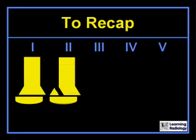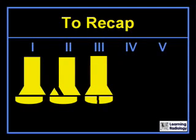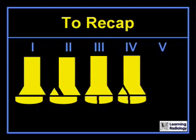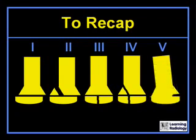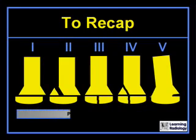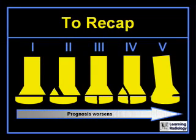To recap: Salter-1 fractures are fractures through the epiphyseal plate alone. Salter-2 fractures are fractures through the epiphyseal plate and the metaphysis. Salter-3 fractures are fractures through the epiphyseal plate and the epiphysis. Salter-4 fractures are fractures through the epiphyseal plate, the metaphysis, and the epiphysis. Salter-5 fractures are crush injuries to the epiphyseal plate that can result in angular deformities. As we move from Salter-Harris 1 to Salter-Harris 5, the prognosis worsens.